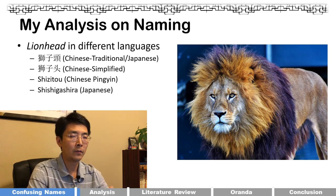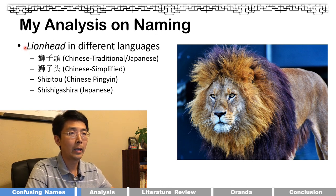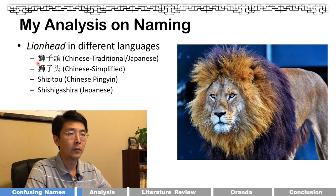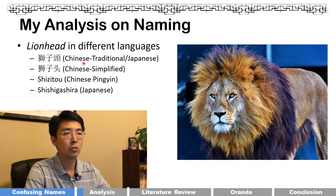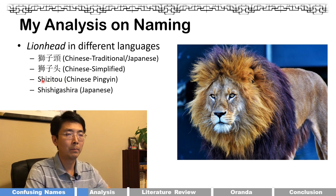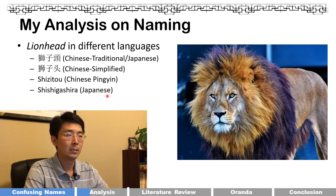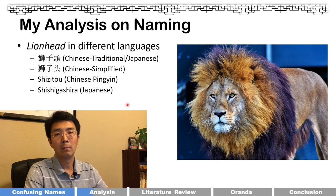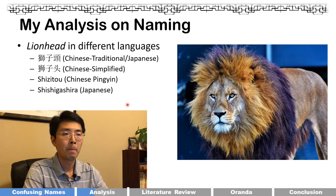Let's start by analyzing the naming. You'll see different ways to spell 'lionhead.' In English it's 'lion head.' In traditional Chinese writing (also shared with Japanese characters) it's 'shizitou.' In simplified Chinese it's also 'shizitou.' In Chinese pinyin it's spelled phonetically as 'shizitou.' And in Japanese pronunciation it's 'shishigashira.' You may encounter all of these forms in Chinese or Japanese literature.